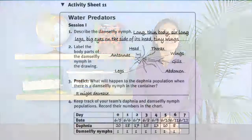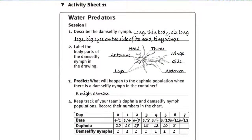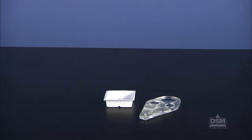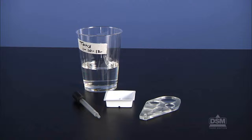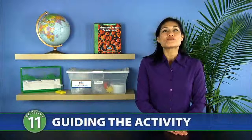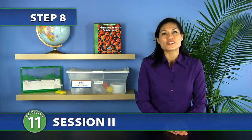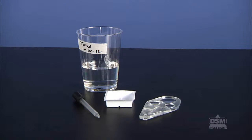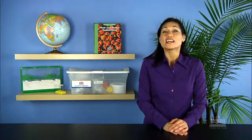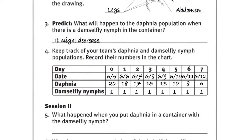To prepare for Session 2, each student will need his or her copy of Activity Sheet 11. Each team of two will need a magnifier, a daphnia counter, a dropper, and its container with daphnia and damselfly nymph. To begin Session 2, return the activity sheets to students and distribute the materials to each team. Allow teams time to count their daphnia and damselfly nymph populations and record the numbers in the chart on the activity sheet.